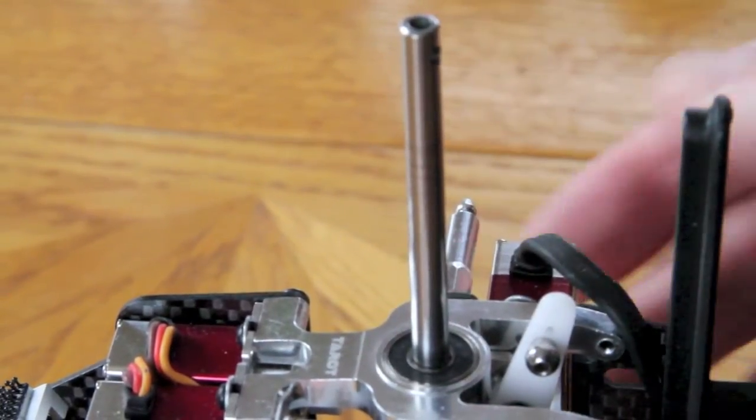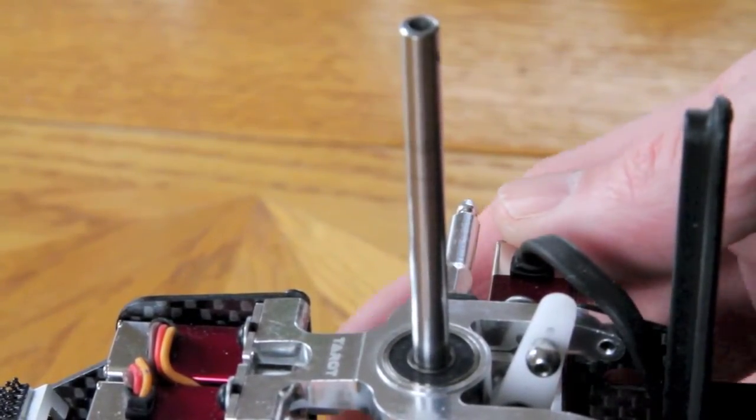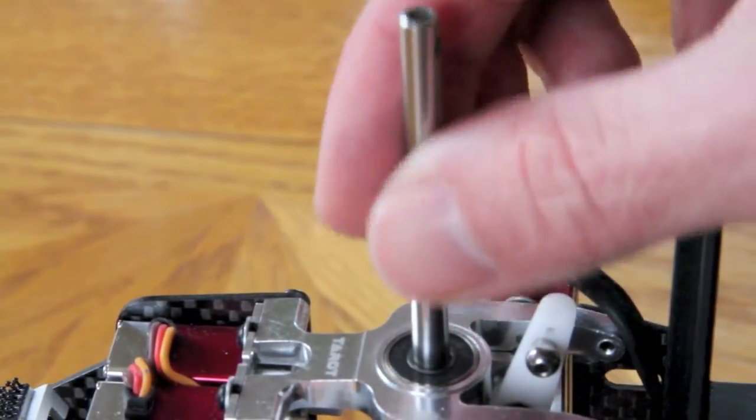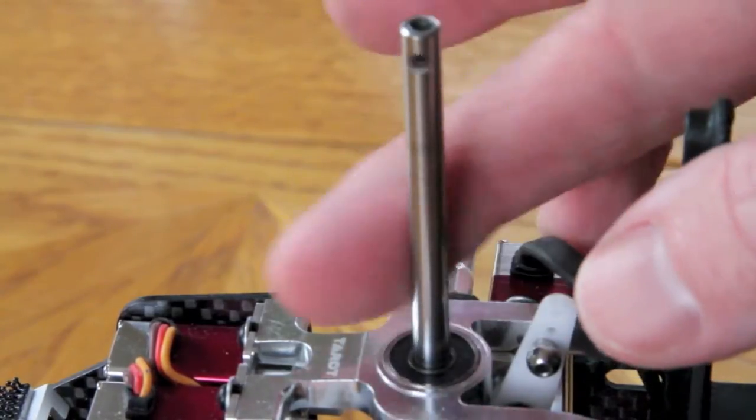This is also a good way to check the bearings to make sure they're still in good shape—still smooth, no grinding after the crash. You can flip it over, make sure you check both sides, and just give it a good check. I feel pretty confident that this main shaft is still in good shape.